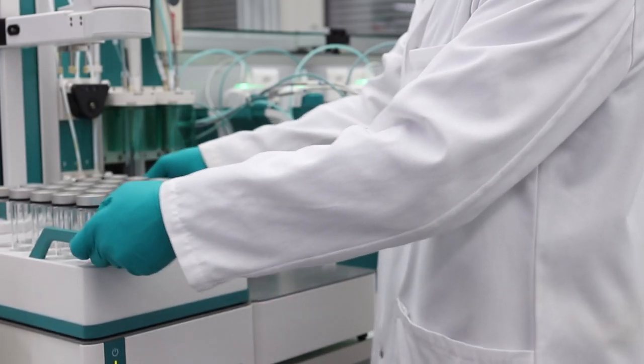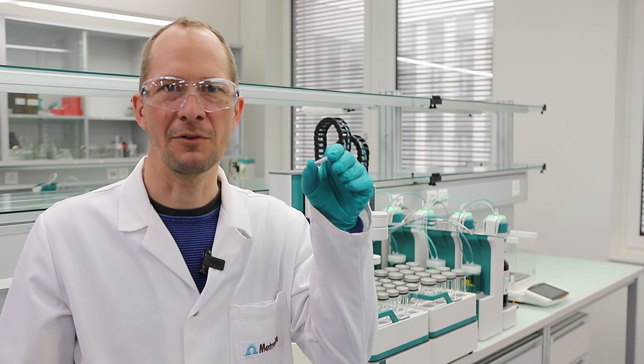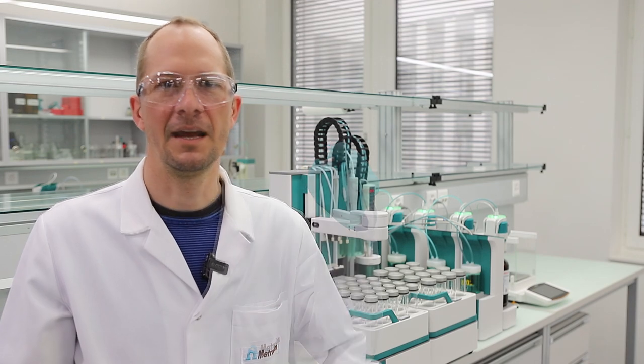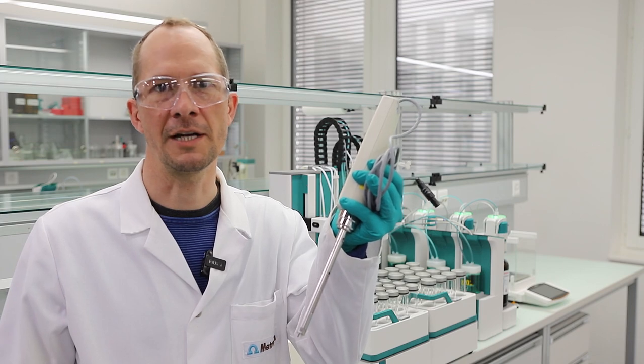The beakers are covered with a lid and are placed in the rack. It's up to you if you want to use a magnetic stirrer, a rod stirrer, or a homogenizer.